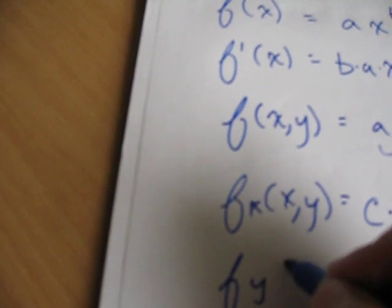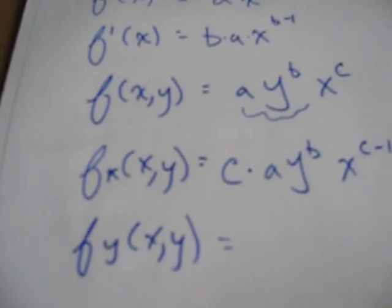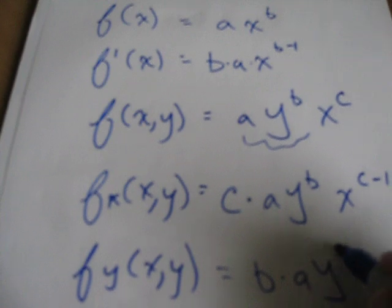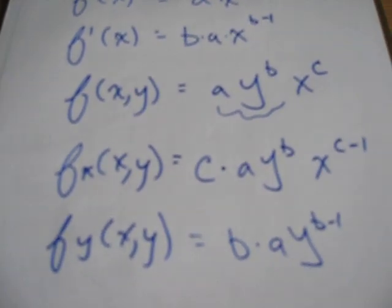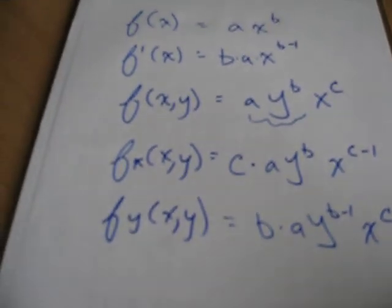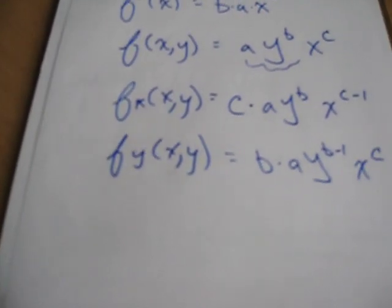If you wanted to take the derivative with respect to y, what would you do? Follow the exact same pattern. Drop the exponent on y down in front: a y to the b, subtract 1 from the exponent on y. And don't forget, you've got x here at the end. Very similar, very simple, very regular. Just get used to it.